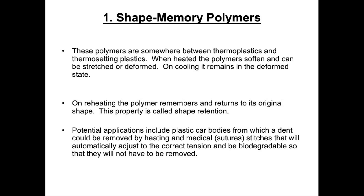So let's first look at shape memory polymers. Very much like shape memory alloys, these materials regain their original shape on heating. These are already having a number of applications. For example, companies are making car bodies from shape memory polymers, and if a car has a dent in it, you can heat up the shape memory polymer and it regains its original shape, getting rid of the dent.